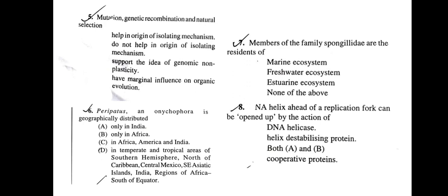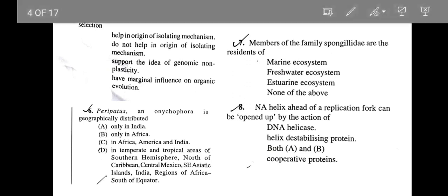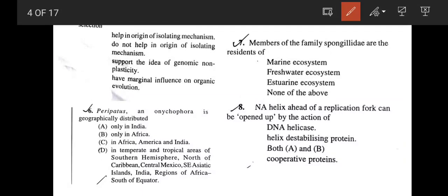The next question: do mutation, genetic recombination, and natural selection help in the origin of isolating mechanisms, or not? The correct answer is option A — they help in the isolating mechanism. Because in reproductive isolation, mutations and recombinations play key roles, and according to Dobzhansky's view, natural selection also plays a very important role in reproductively isolating animals.